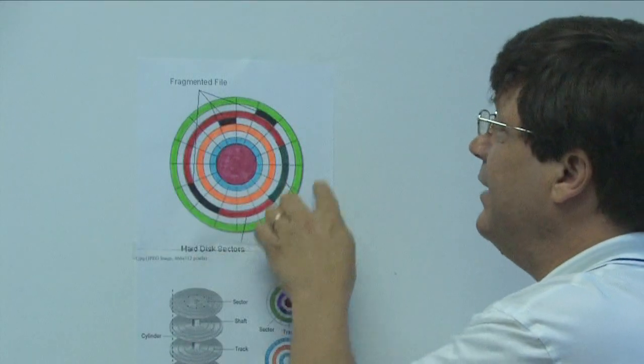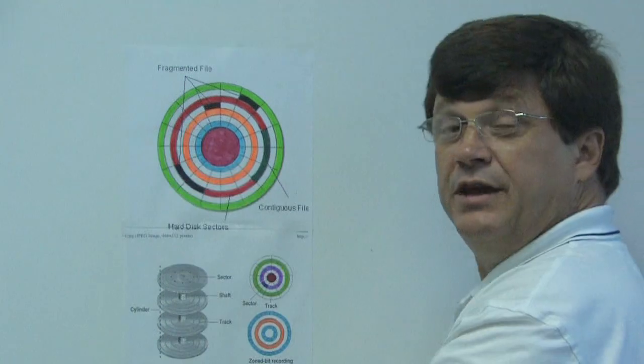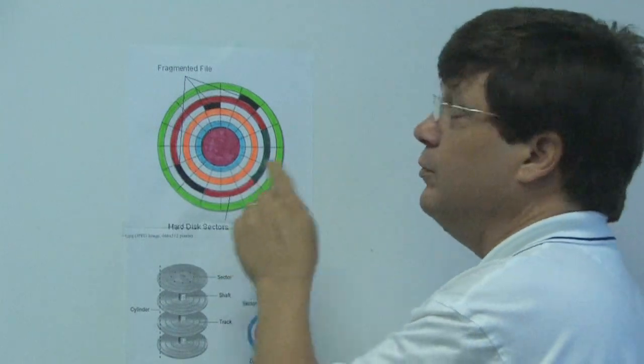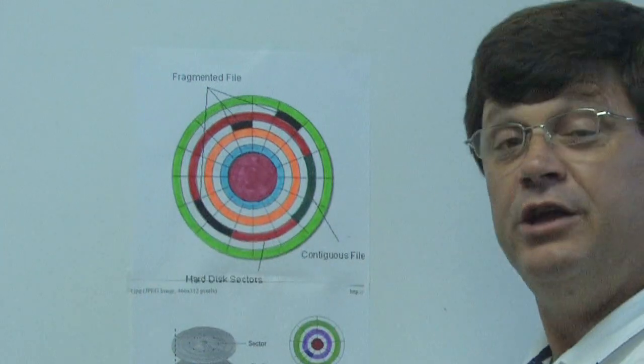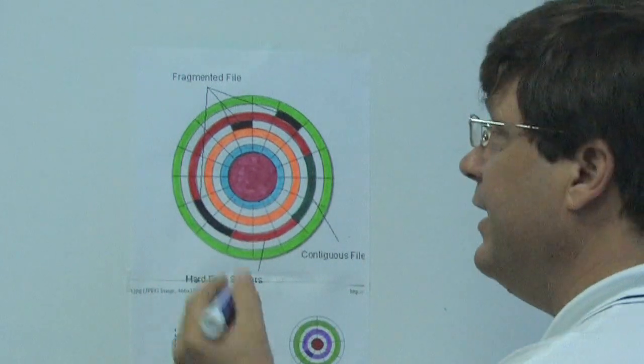The hard disk platter is divided into tracks. These tracks are then divided into pie-shaped sections called sectors. Each of the sectors is then divided into blocks.